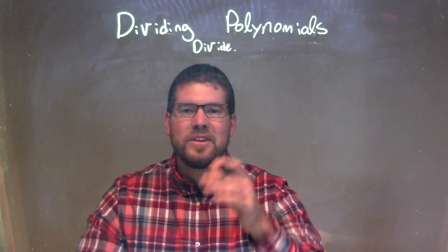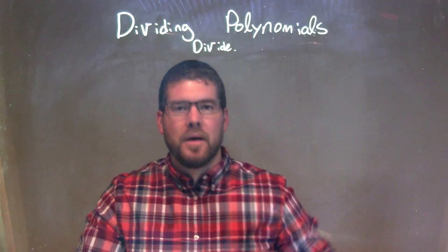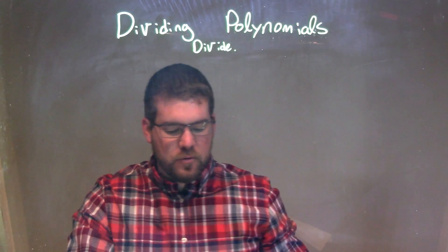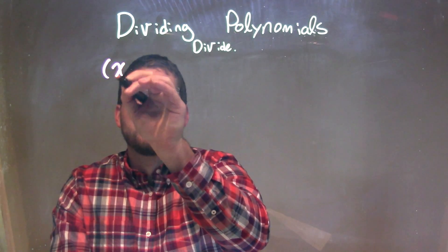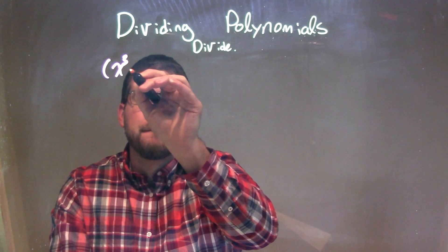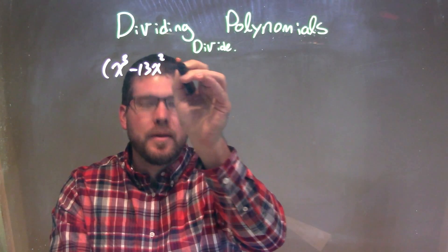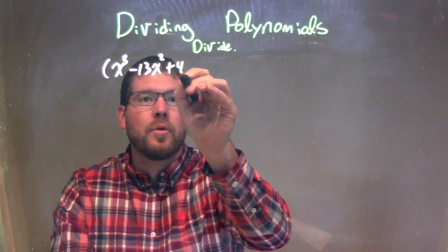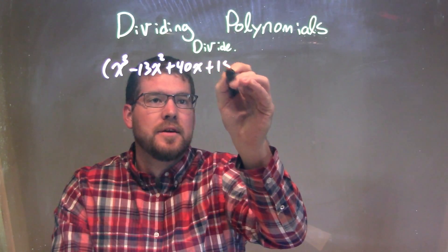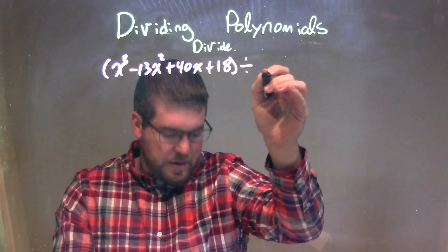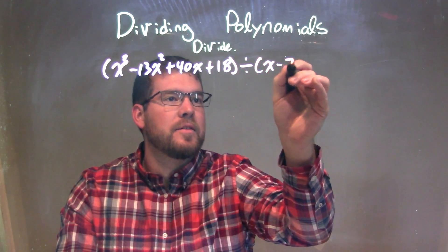Hi, I'm Sean Ginn, and this is MinuteMath. Today we're going to learn about dividing polynomials. So if I was given this problem here: x to the third minus 13x squared plus 40x plus 18 divided by x minus 7.